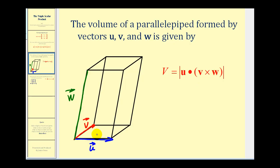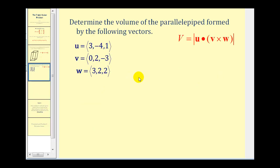Let's give it a try. To determine the volume of a parallelepiped formed by the following three vectors, we just need to find the absolute value of this triple scalar product. We'll form a three-by-three determinant using these three vectors and then take the absolute value of that.